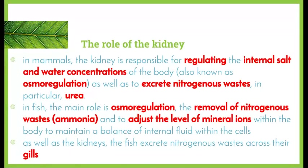The role of the kidney in fish and mammals is dependent on their environment. In mammals, the kidney is responsible for regulating the internal salt and water concentration of the body — also known as osmoregulation — as well as excreting nitrogenous wastes. In particular, mammals need to get rid of urea. In fish, the main role is osmoregulation as well, including regulating salt and water concentrations.